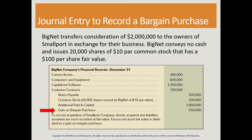In the journal entry for the bargain purchase, Small Port's current assets and liabilities are recorded at fair market value. The accounts associated with the purchase price should tie to the $2 million consideration transferred — only those two accounts apply in this case.